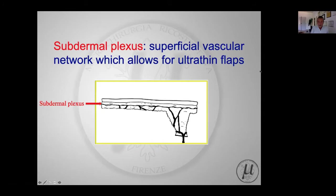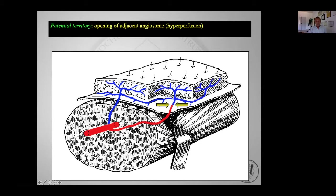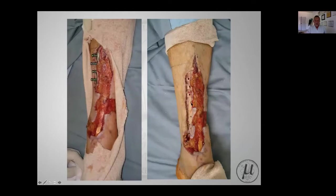The subdermal plexus is a superficial vascular network which allows for ultra-thin flaps. Each artery has an anatomical territory - a portion of skin supplied by a single perforator under physiological conditions. However, if we ligate one artery, there is recruitment of additional angiosomes according to the phenomenon called hyperperfusion - the links between arteries open when one artery is no longer working.